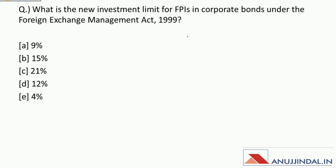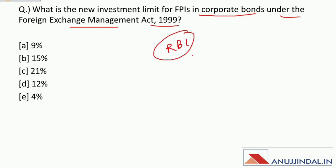What is the new investment limit for FPIs in corporate bonds under the Foreign Exchange Management Act of 1999? This limit has been decided by RBI. Earlier this limit was 9%; now it has been increased to 15%.